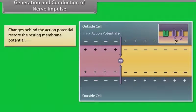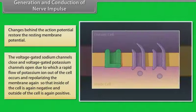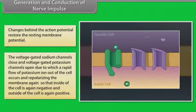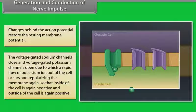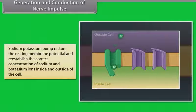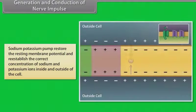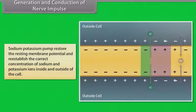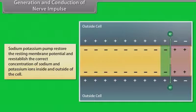Changes behind the action potential restore the resting membrane potential. The voltage-gated sodium channels close and voltage-gated potassium channels open, causing a rapid flow of potassium ions out of the cell, repolarizing the membrane again so that the inside of the cell is again negative and the outside is again positive. The sodium-potassium pump then restores the resting membrane potential and re-establishes the correct concentration of sodium and potassium ions.